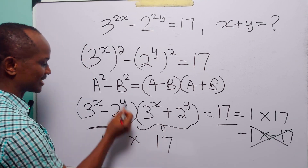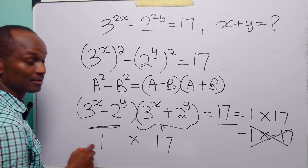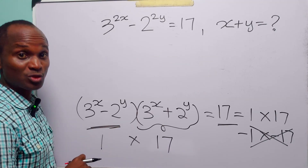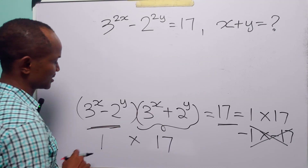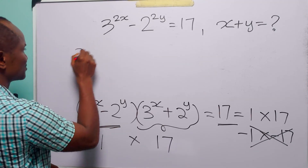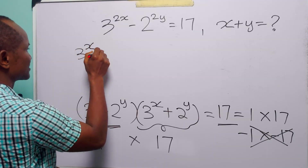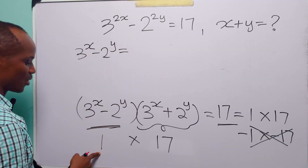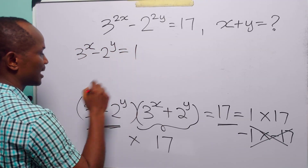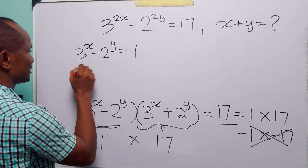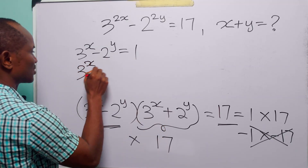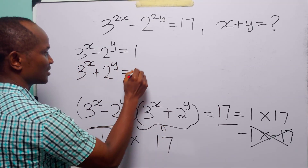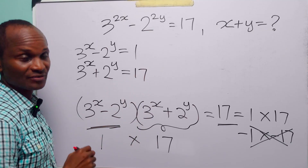So we have the larger bracket times the smaller bracket equal to 1 times 17. This gives us two equations: 3 to the power x minus 2 to the power y equals 1, and 3 to the power x plus 2 to the power y equals 17.